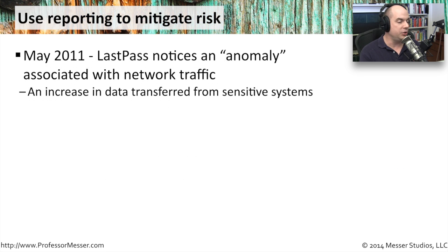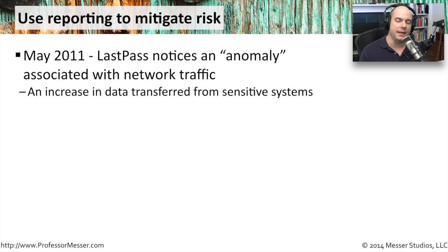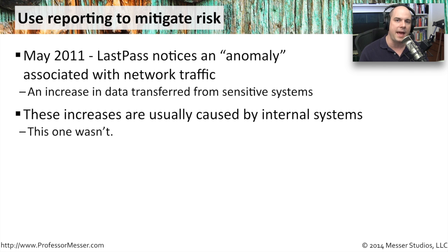A good example of this is from May 2011, when a company called LastPass — which creates a digital wallet where you can store all your passwords encrypted in one place — was looking at their logs and reporting system. They noticed an anomaly: an increase in traffic from a particular server that contained sensitive password data. They saw a small uptick in the amount of traffic transferred, and after accounting for internal backup and testing systems, they went back and looked at their logs and realized this wasn't them. This could have been someone else in their systems transferring sensitive customer information — and that was a significant problem.